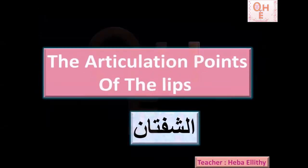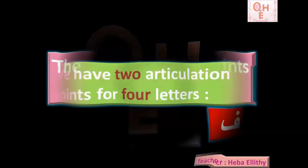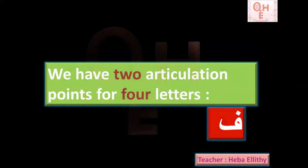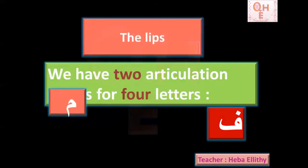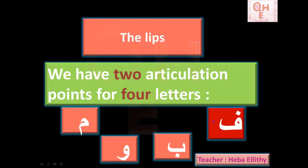After we finish Al-Shifa, we will go to our fifth major area, which is the nasal passage, Al-Khayshum. Watch today to know the articulation points from Al-Shifa and how many letters come out from it. We have two articulation points for four letters from the lips. The first articulation point has letter Fa. The second articulation point has three letters: Meem, Waaw, and Ba.